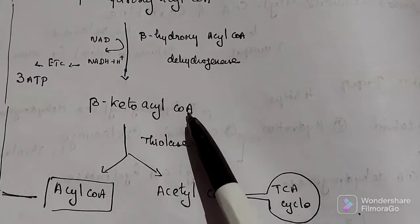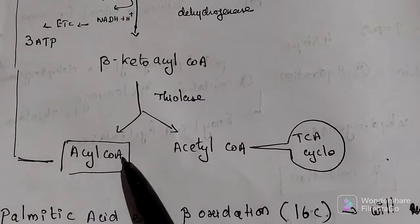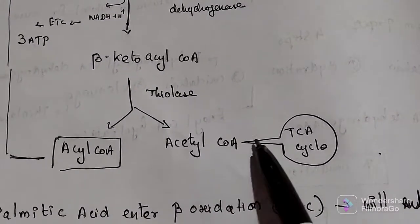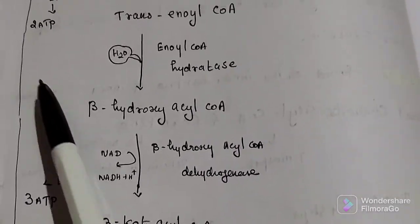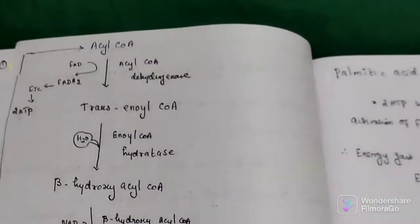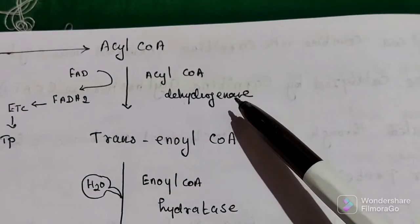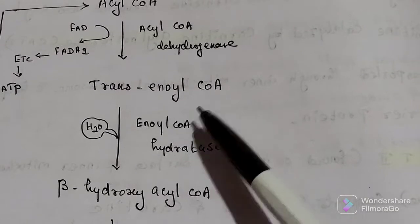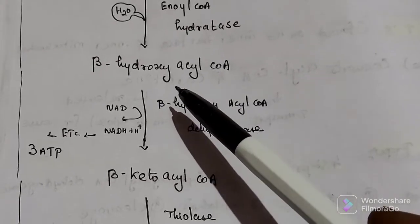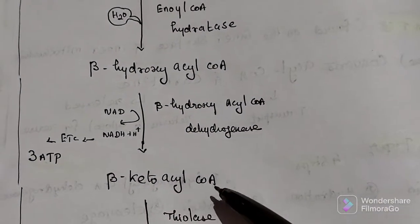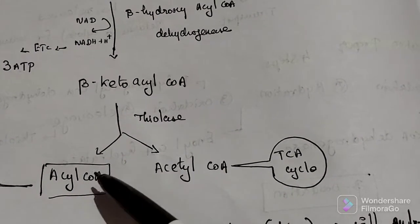The beta-ketoacyl-CoA is acted upon by thiolase enzyme, where cleavage occurs. It is converted into acyl-CoA and acetyl-CoA. This acetyl-CoA enters the TCA cycle. The remaining acyl-CoA again undergoes the same beta oxidation reaction: acyl-CoA is converted into trans-enoyl-CoA (oxidation), then into beta-hydroxyacyl-CoA (hydration), then into beta-ketoacyl-CoA (oxidation), and then cleavage occurs again.